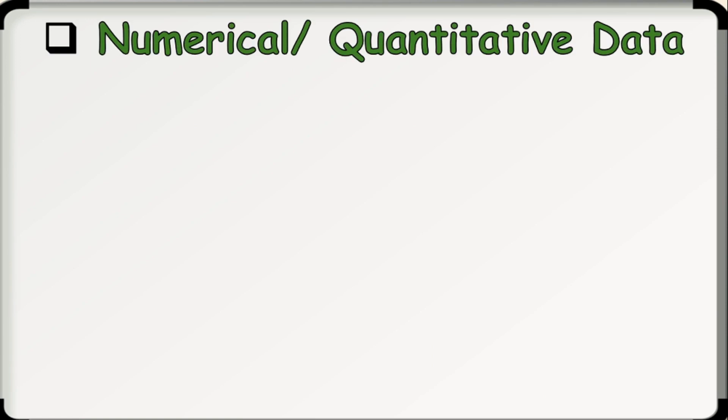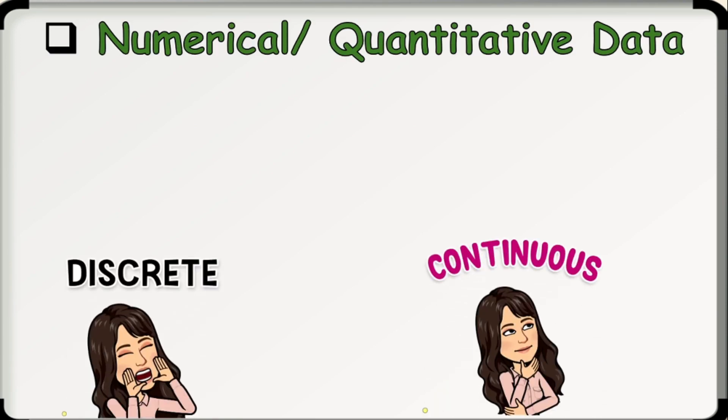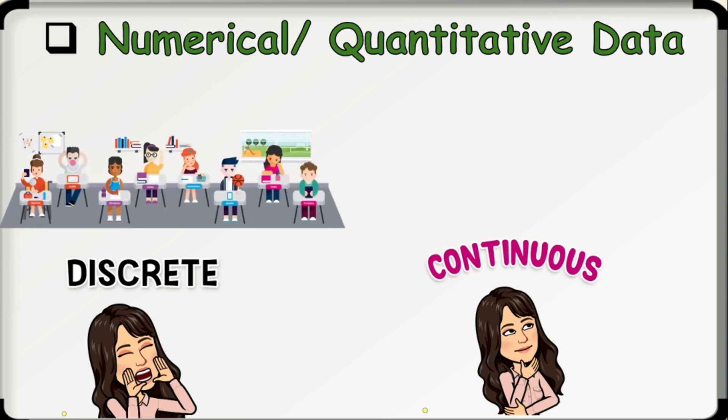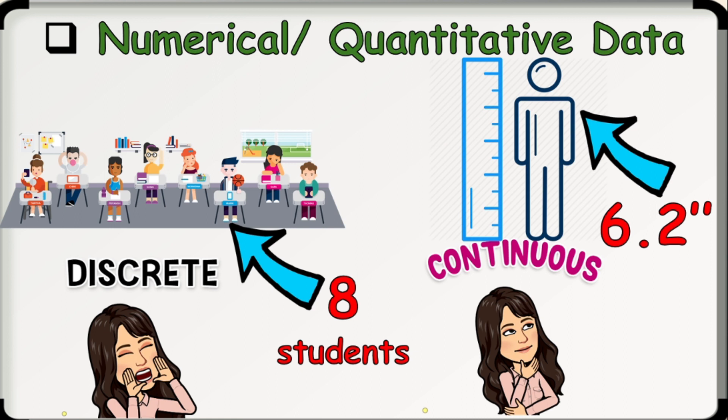We have two types of quantitative data, and these are discrete and continuous. Discrete data is counted while continuous data is measured. Discrete data can only take certain values, such as whole numbers or counting numbers. For example, the number of students in a class. This is discrete because we have an exact value for it, like 30 students, 35, 40, 50, and so on. Whereas continuous data can take any value within a range, or in layman's terms, we can have decimal values for this type of quantitative data. For example, a person's height. This is continuous because we can have values like 5 feet, 5.3 feet, 6.2 feet, etc.